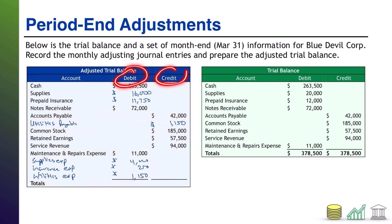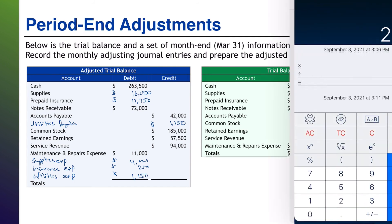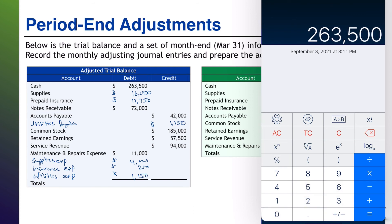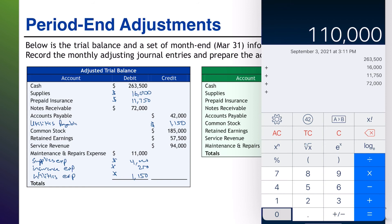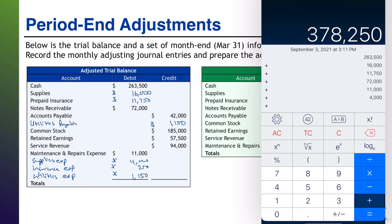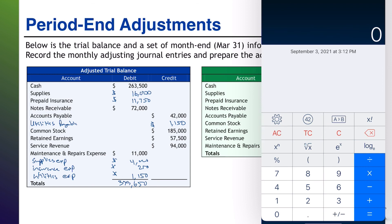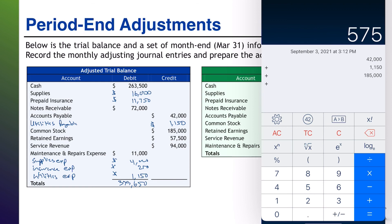The last step is to tally up our debits and credits to make sure they are still equal. Going through the debits: $263,500 plus $16,000 plus $11,750 plus $72,000, another $11,000, then $4,000, $2,250, and $1,150 — I'm getting total debits of $379,650. Going over to the credits: $379,650 plus $57,500 and then $94,000 puts us at $379,650. Debits equal credits — we can feel fairly confident that our adjusted trial balance does not contain any obvious errors.